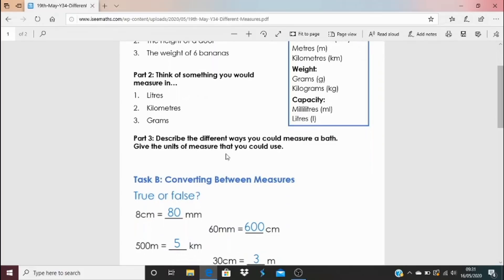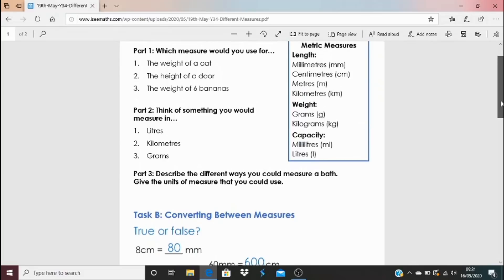And then part three, describe the different ways you could measure a bath. So think about which units would you use if you were measuring a bath for the different aspects of it, maybe length or weight or capacity.